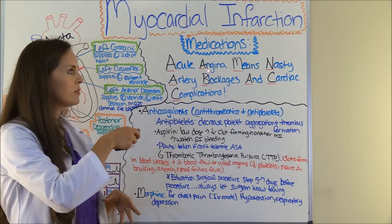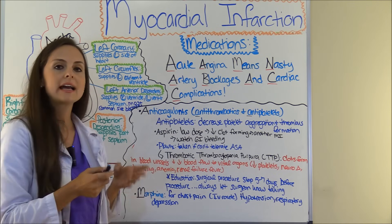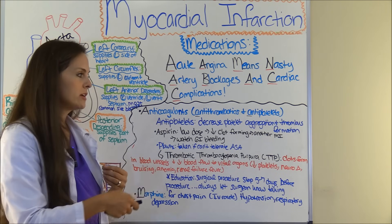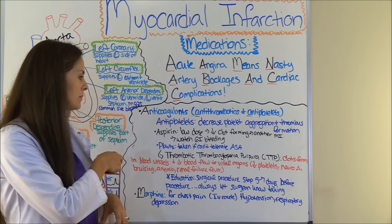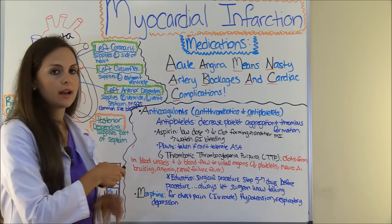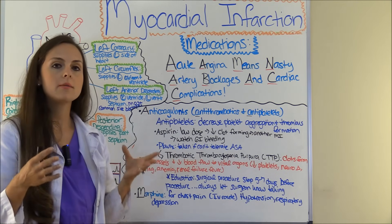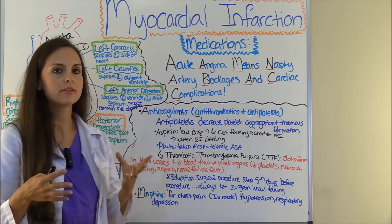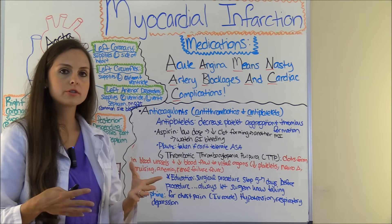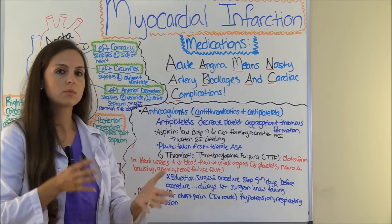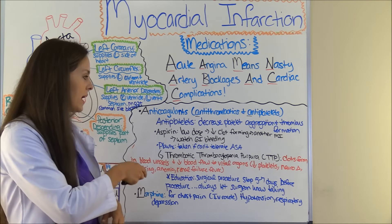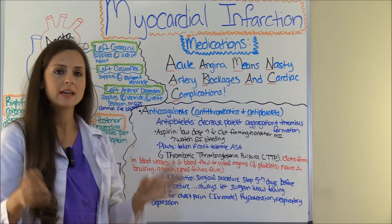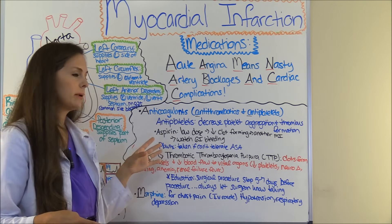The next part of our mnemonic is antiplatelets, which work by decreasing platelet aggregation and thrombus formation. Popular ones include aspirin and Plavix. Aspirin is usually prescribed in a low dose and decreases clot formation — so if another plaque ruptures, it would decrease platelets from aggregating at the site of injury. However, you have to watch out for GI bleeding, and patients who've had a history of that are definitely at risk when taking aspirin.